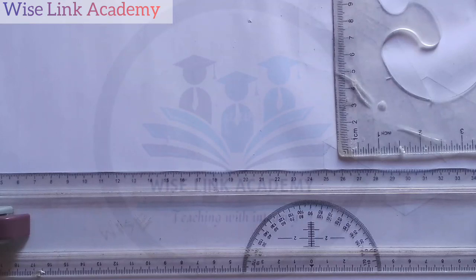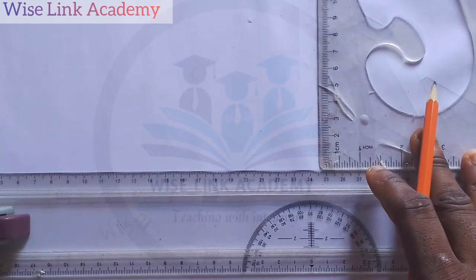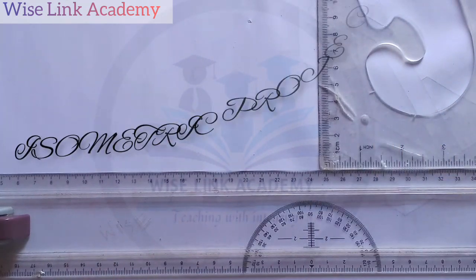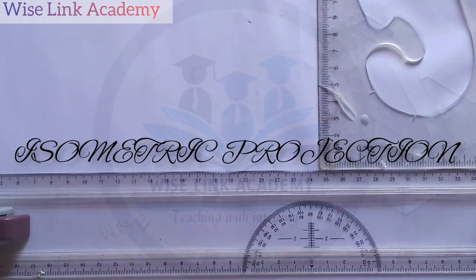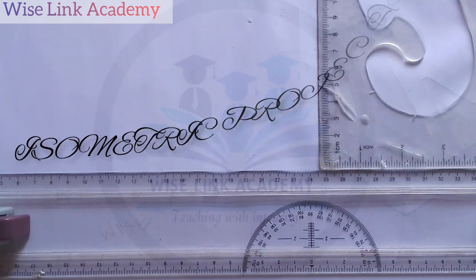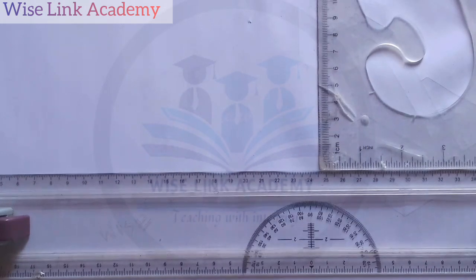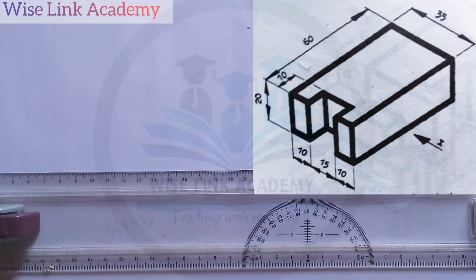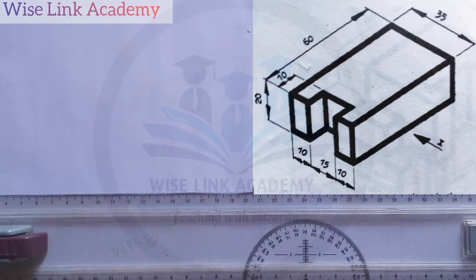Hello, welcome to today's class. For today, we are going to be looking into an aspect called isometric. We are going to be reproducing that figure you are seeing at the right hand side of the screen. That figure is an isometric problem.